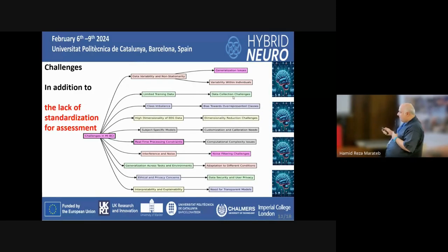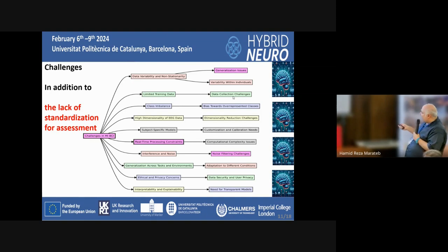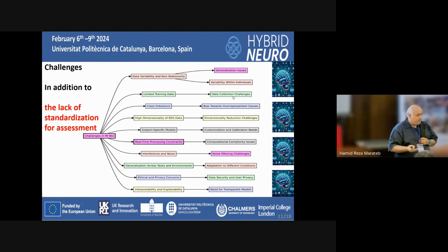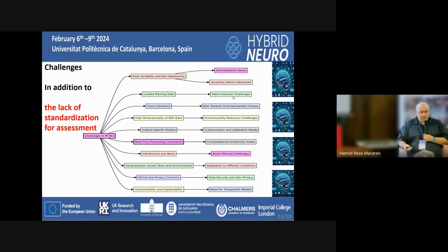What I have been doing is categorizing everything as a challenge for the ML and DL methods in MIBCI — I like categorization, it's like mind mapping. The first problem is data variability and non-stationarity. Even when you repeat the MIBCI for the same subject, you cannot have the same results — the accuracy would drop. We will have a problem of generalization: you cannot generalize it for other people, and you cannot even use it for the same person because the accuracy would drop the next day.